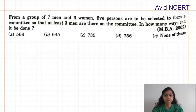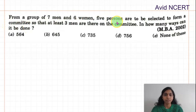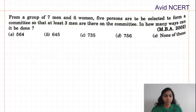Hello viewers, welcome to my channel. This is Geeta. Today we'll be solving a question from the MBA 2002 question paper: from a group of seven men and six women, five persons are to be selected to form a committee, such that at least three men are there on the committee. In how many ways can it be done?